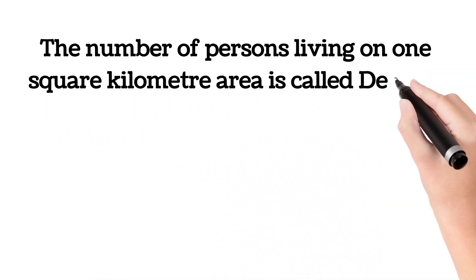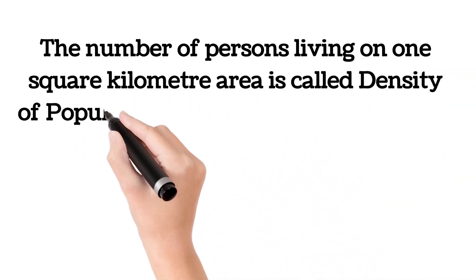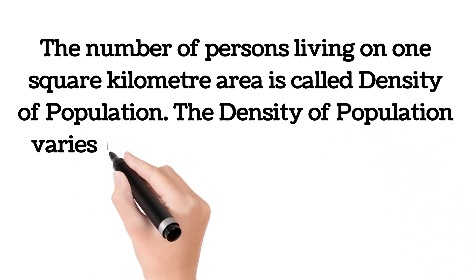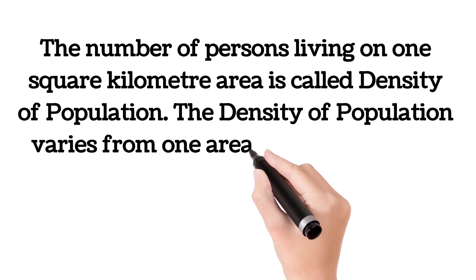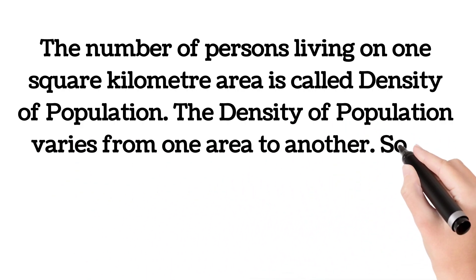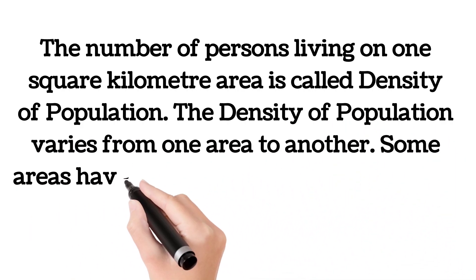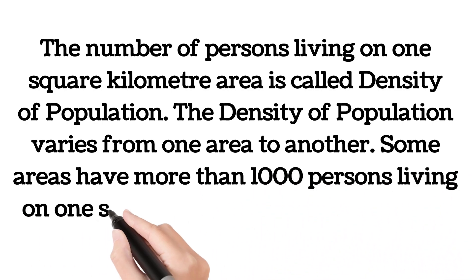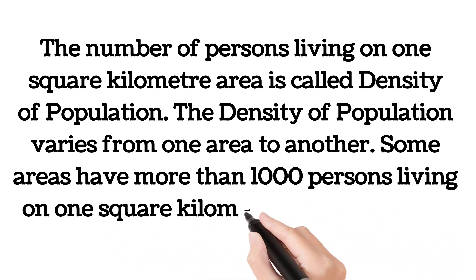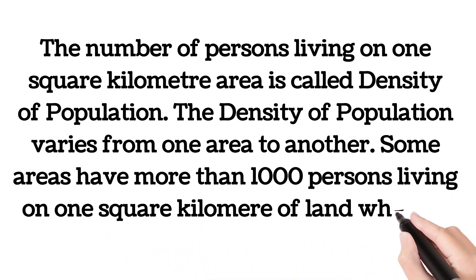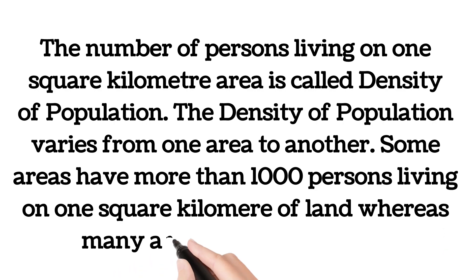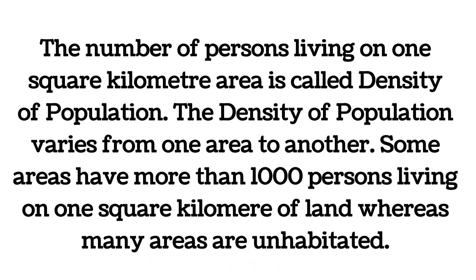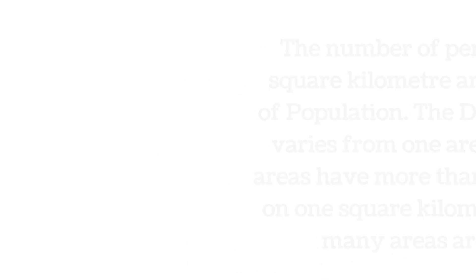More than 90% of the world's population live in about 10% of the total land surface. The number of persons living on one square kilometer area is called density of population. The density of population varies from one area to another. Some areas have more than a thousand persons living on one square kilometer of land, whereas many areas are uninhabited.